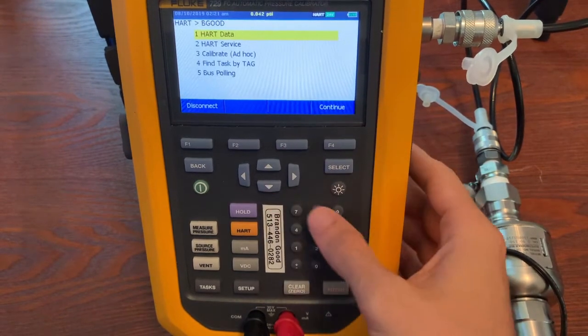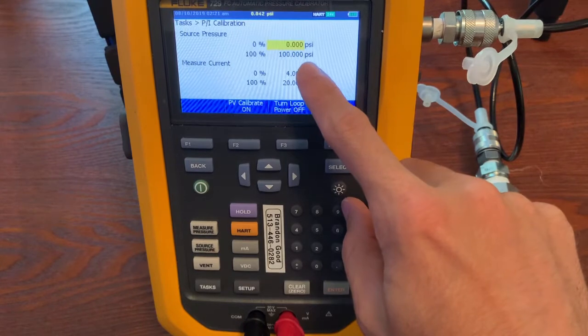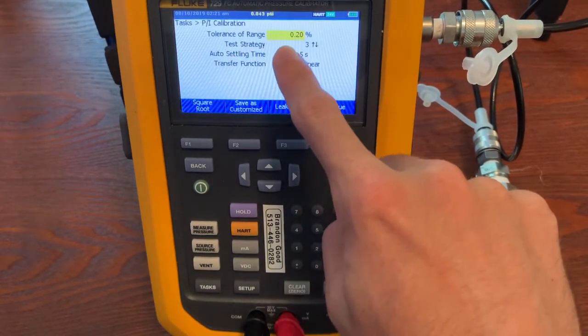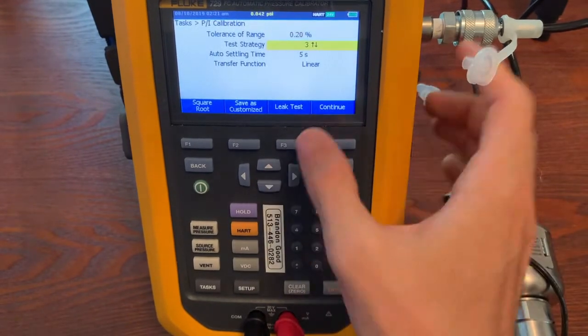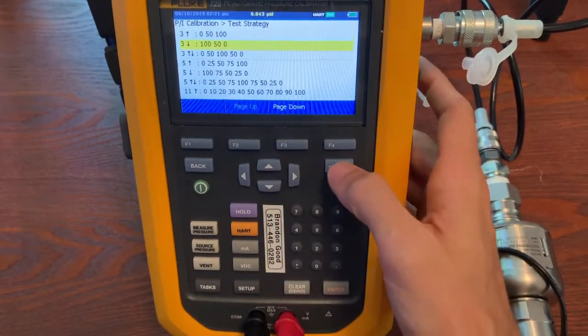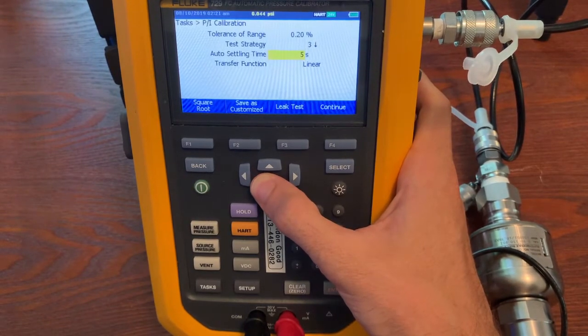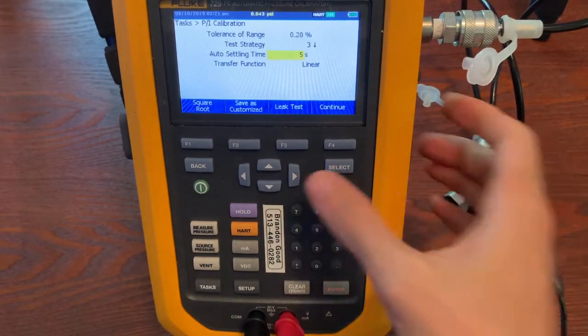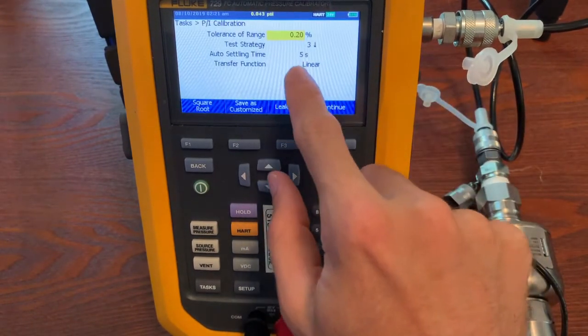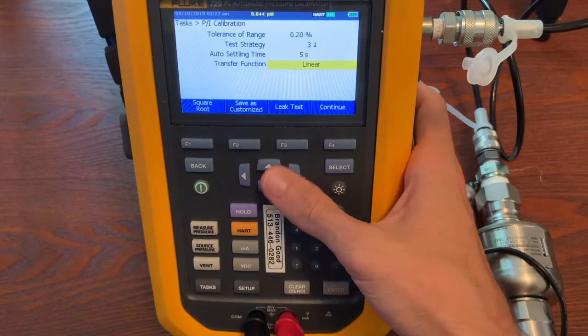So we are going to do ad hoc. So you can hit 3 or scroll down to it. Hit select. Now we are going to do a pressure calibration from 0 to 100 psi, 4 to 20 milliamps. I'm going to go forward. Now we're going to say a tolerance range. So you tell your tolerance range. And then what kind of test strategy you're going to have. So you're going to do 3 up, 3 down. You're just going to do 3 up, 3 down, so on and so forth. I'm going to do 3 down, so I end with no pressure in the system. But you can do whatever you want. What's the settling time? We're going to say it could be 5 seconds. Maybe we'll say 5 seconds. And it's linear. So continue.